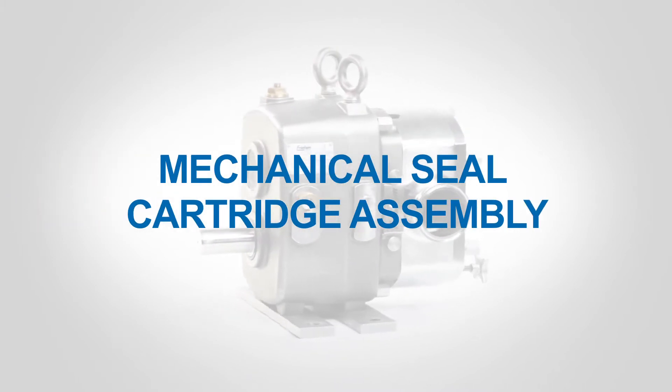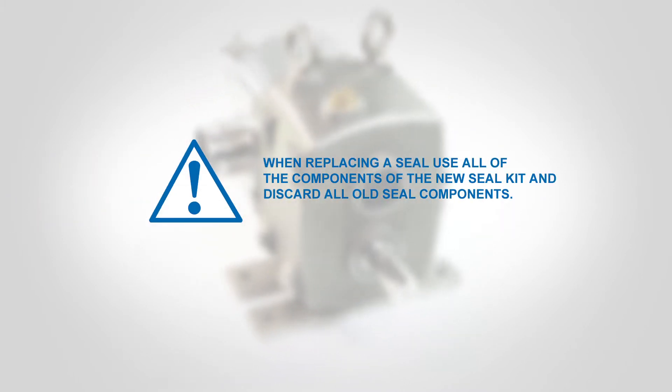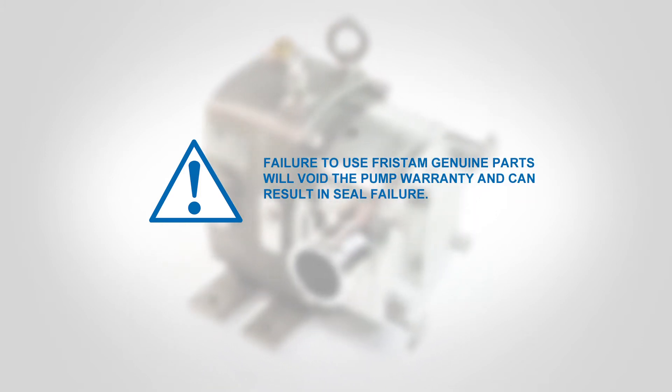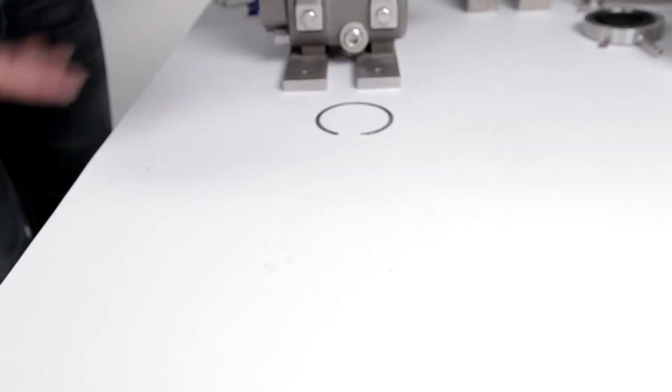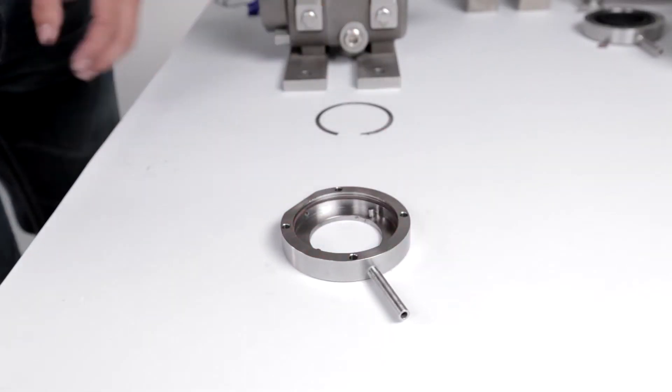Mechanical Seal Cartridge Assembly. When replacing a seal, use all of the components of the new seal kit and discard all old seal components. Failure to use Fristam genuine parts will void the pump warranty and can result in seal failure. Assemble the cartridges one at a time.